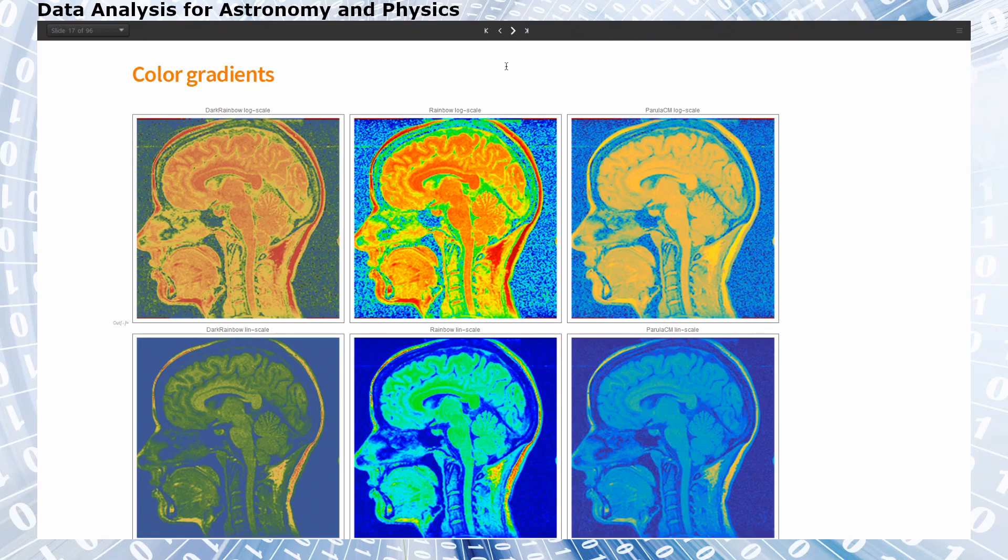Which is why the outskirts, the outside of the skull in this figure looks grainy because we actually highlight also or give larger weight to also the very low signal to the noise. And on the bottom row, I have chosen a linear scale.